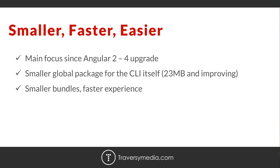In RC2, they started only publishing what the CLI needs and only what your project needs in terms of build and schematics inside your project's package.json. This leads to a much smaller global package for the CLI, which is around 23 megabytes or so, and it keeps improving. They're stripping out what you don't need. The bundles will also be smaller in size, which of course will make your app overall run faster for a better overall experience.